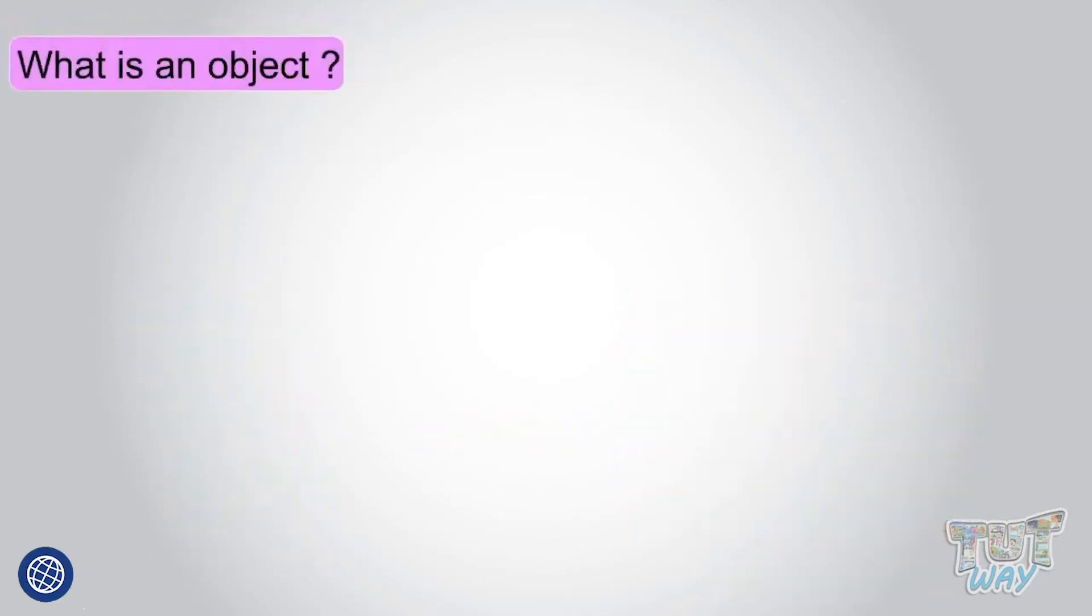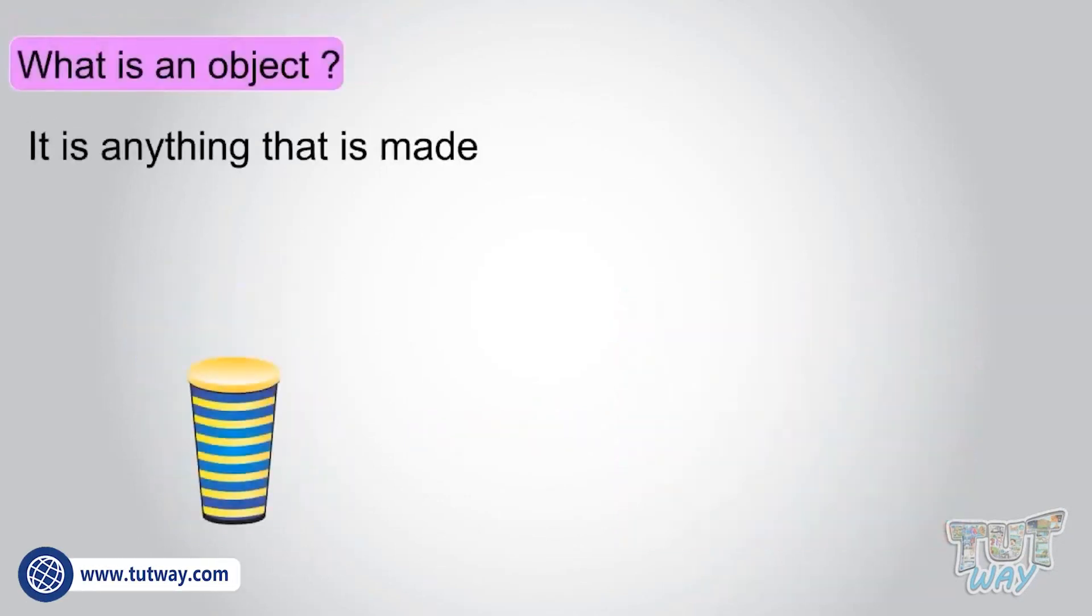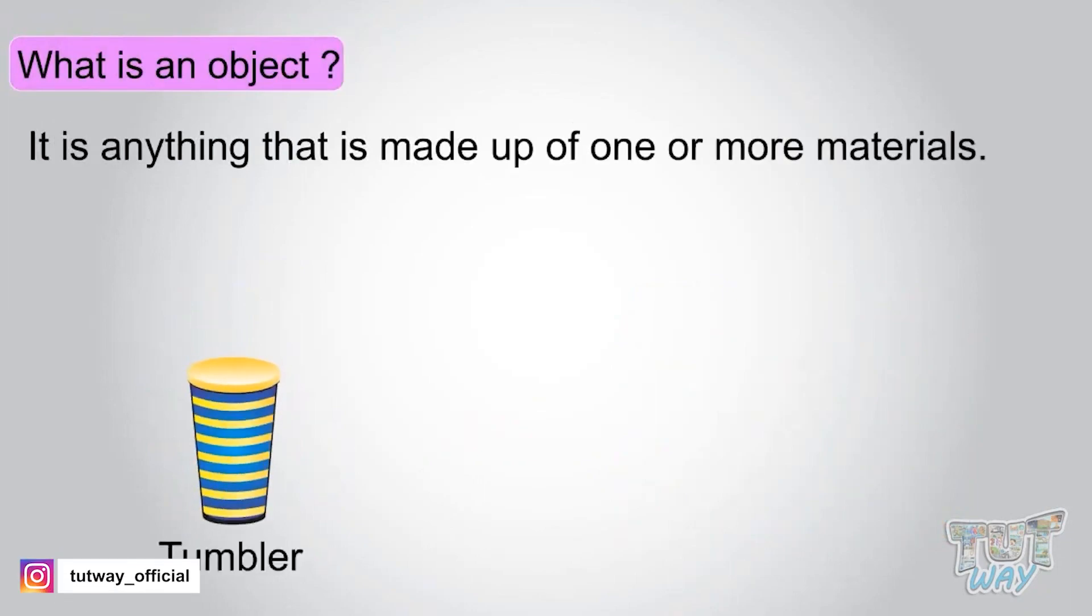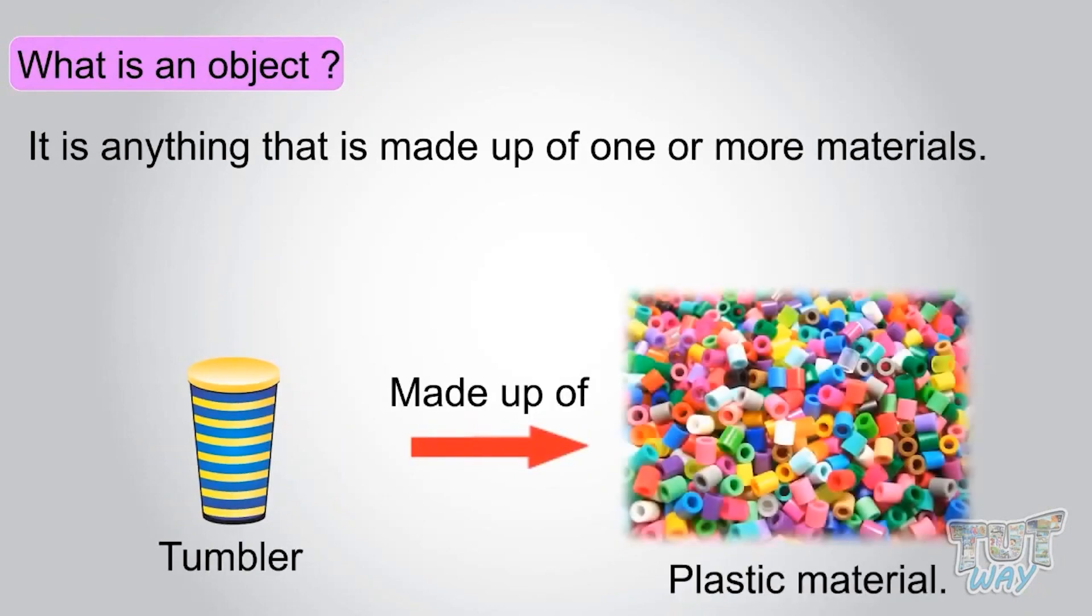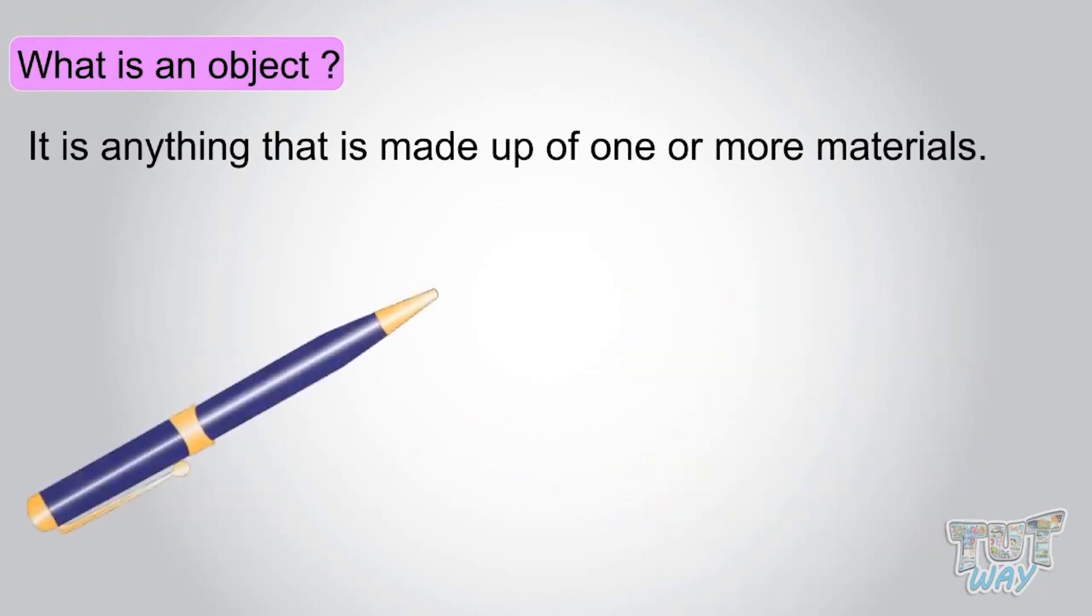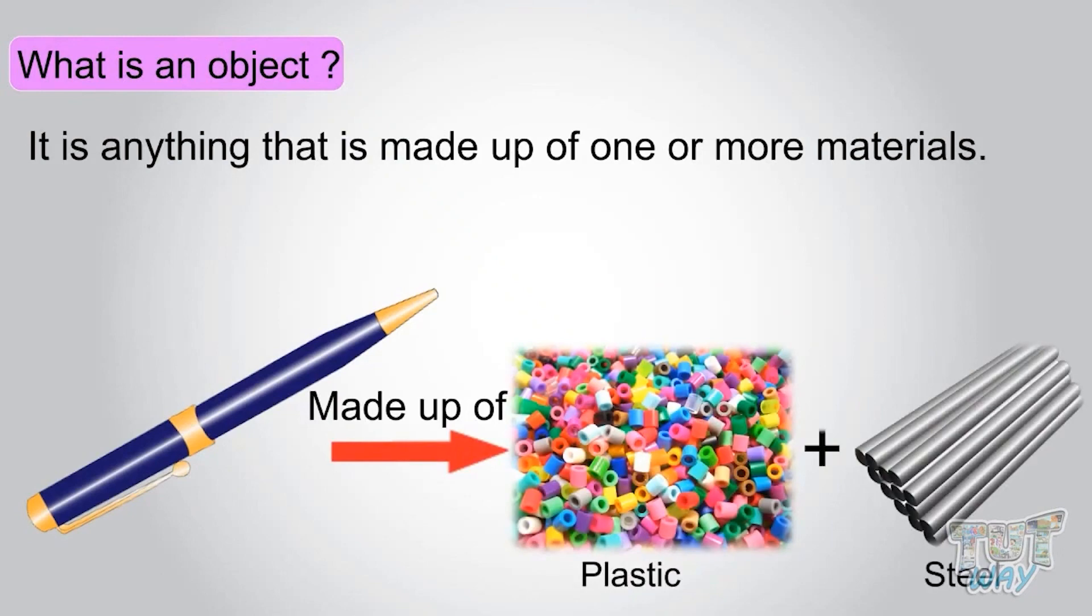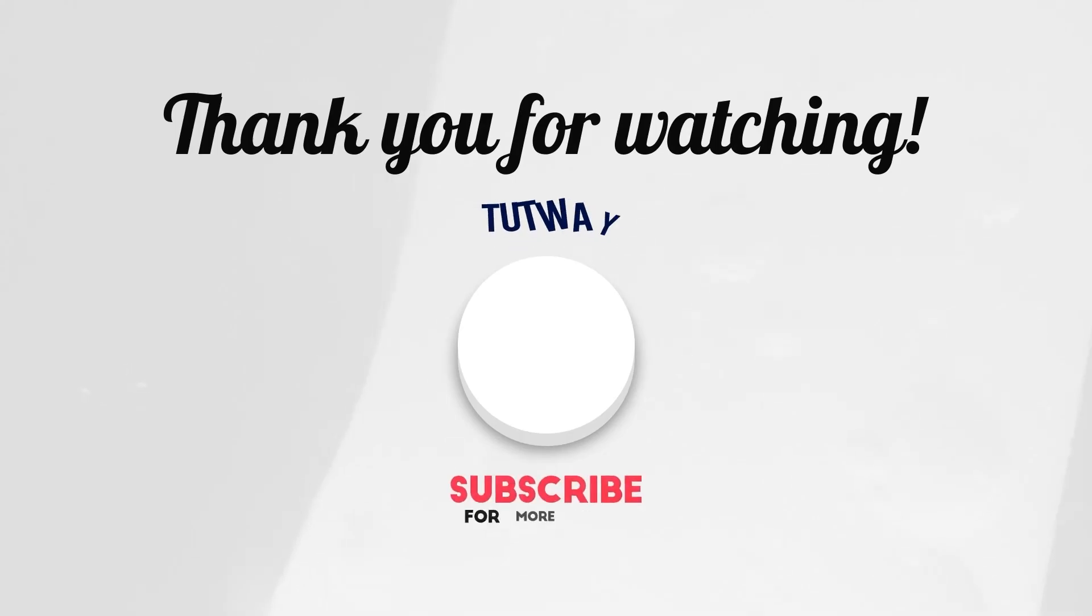So what is an object? It is anything that is made of one or more materials. This tumbler is an object made up of two types of materials: plastic and steel.